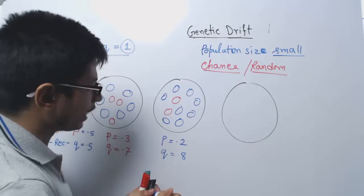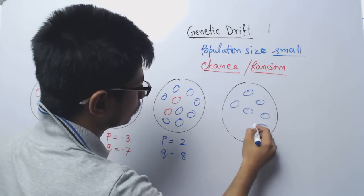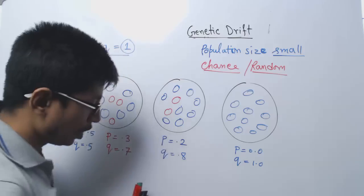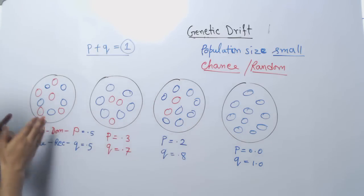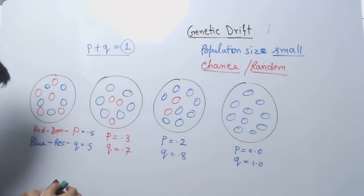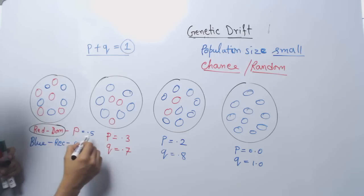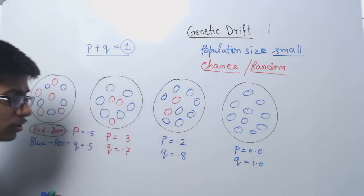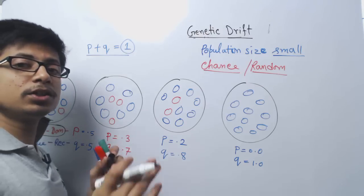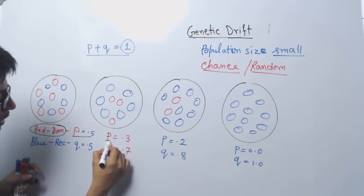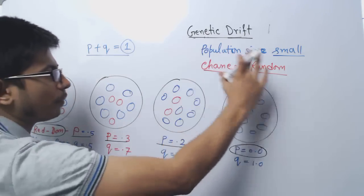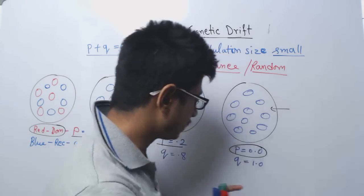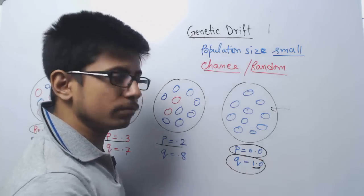The allele frequency is changing over time. After another round, the allele frequency changes to P becoming 0.2 and Q becoming 0.8. After some more time, P becomes 0 and Q becomes 1.0. You can see that slowly the frequency for the dominant allele goes to zero over time — it is completely depending on chance — and ultimately the complete population now has only one single type of allele. That is the allele for the recessive; it is completely 1, Q becomes 1.